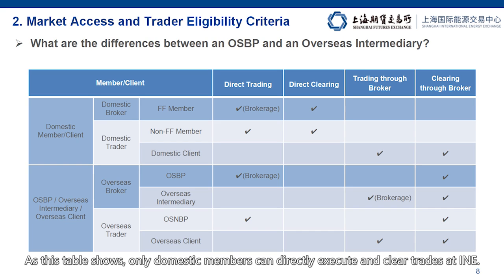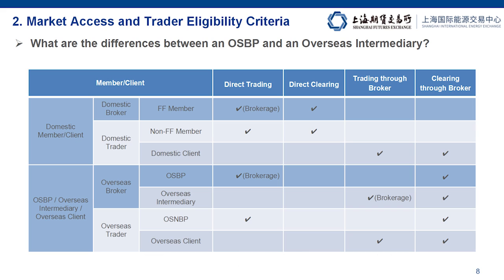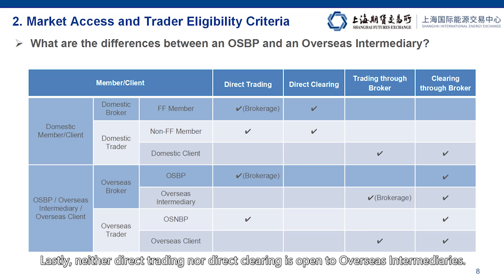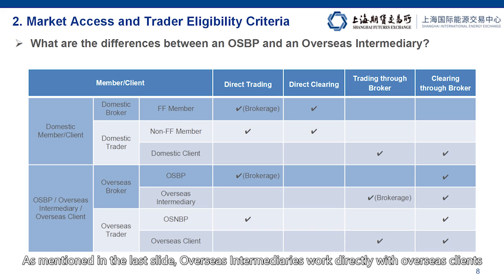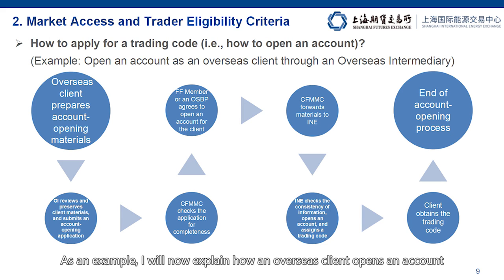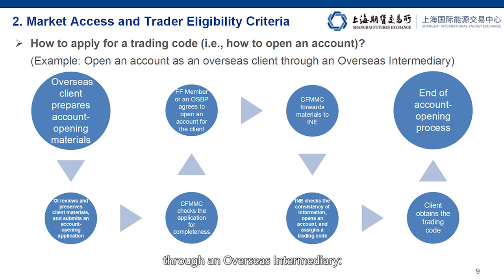As this table shows, only domestic members can directly execute and clear trades at INE. For OSPs, direct trading is available, but not direct clearing, which must be done through a domestic FF member. Lastly, neither direct trading nor direct clearing is open to overseas intermediaries. Overseas intermediaries work directly with overseas clients to open accounts and to route their orders to FF members. As an example, I will now explain how an overseas client opens an account through an overseas intermediary.